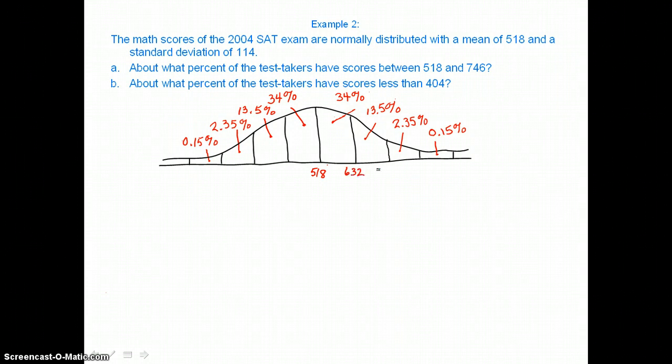we'll add one standard deviation of 114 to that 518 and get 632. And then we'll add another standard deviation of 114 to 632 and get 746. And our last label on the right is three standard deviations from the mean, so we'll add 114 to 746 and get 860.